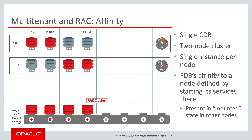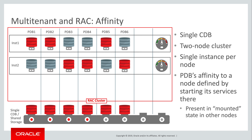With this configuration, we've got a pretty nicely balanced cluster. The resource meters on the right here show a comfortable load on each node. But now, let's add a couple more PDBs to the cluster. We'll open PDB5 in node 1 and PDB6 in node 2. Now our cluster is beginning to look a little overburdened, with both resource meters now in the red zone.